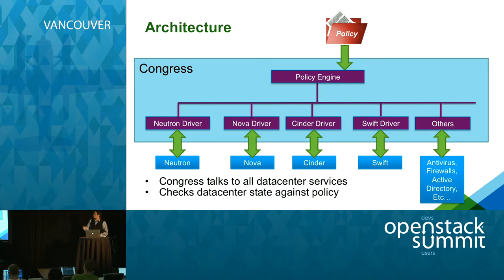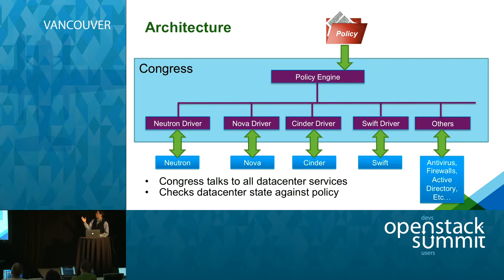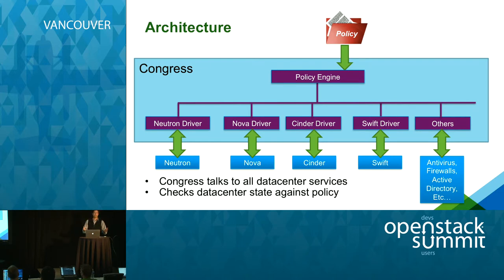On the bottom half of the Congress box, you can see a number of drivers — Neutron, Nova, Cinder, Swift. A driver is a specialized piece of code that interacts with each of the data center services shown below. So Neutron has a Neutron driver, Nova has a Nova driver, et cetera. Each driver reads the state of its data center service — for example, the Nova driver asks Nova for a list of all hosts, the VMs living on those hosts, and associated metadata — and delivers that to the policy engine in the form of tables, much like a SQL database. Given that state, the policy engine can read those tables and understand the state of the data center to perform policy checks.